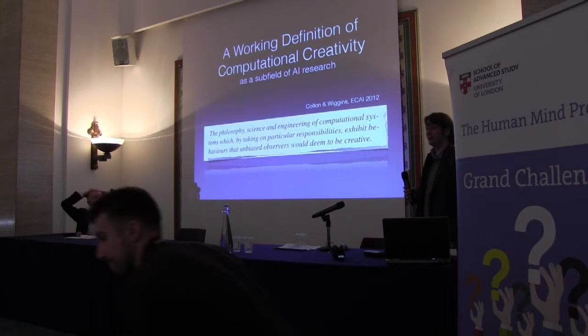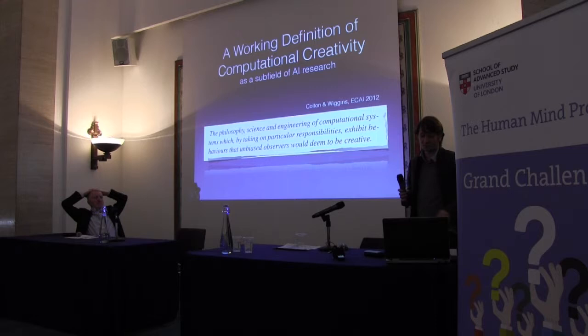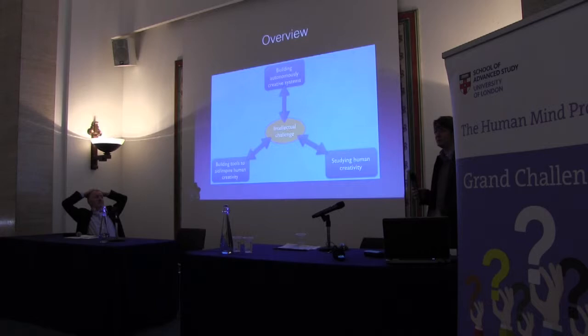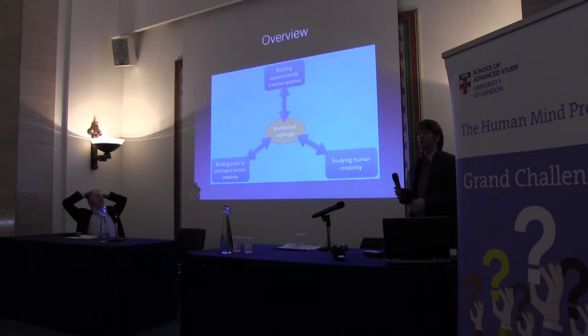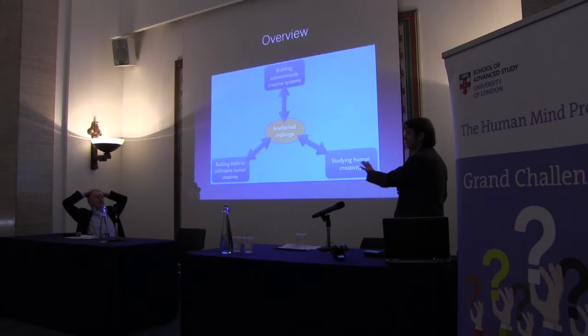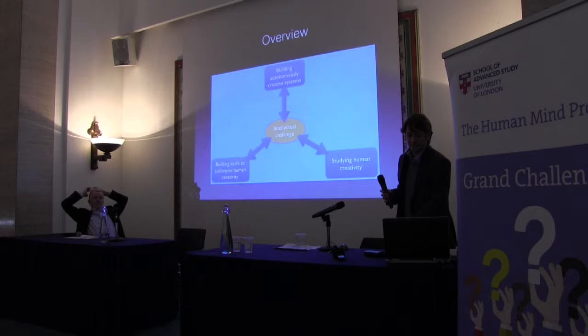It generates stuff, and I'm going to talk about that a little bit today. As a field, we have three main challenges depending on who we're speaking to. I'm very much interested in the top one: building autonomous creative systems. Other people think of computational creativity as just another tool in the philosophers' toolbox to study human creativity. And then there's a middle ground of computational creativity support tools, which help people to be more creative by acting as a muse, a tool, or a collaborator.